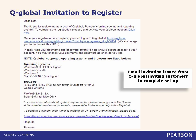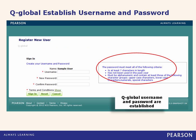By clicking on the link in the email on the previous slide you will be redirected to this page. Here you are able to set up your new QGlobal username and password. Please note the three password setup criteria on the right of the screen when thinking of a password for your QGlobal account.